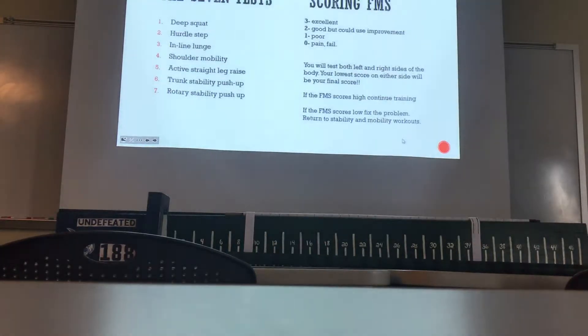If you can't perform during any of these tests, you automatically get a zero because there's something wrong with you in that area of the body and we have to go deeper. You will test both your left and right sides of the body. Your lowest score on either side will be your final score.